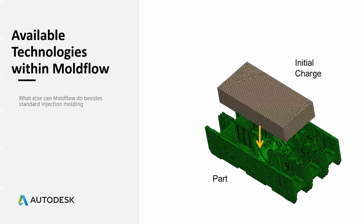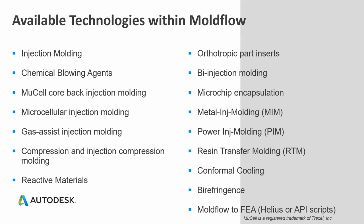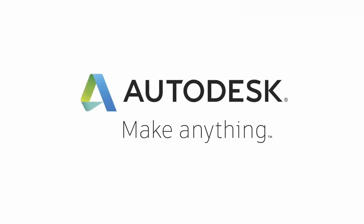Finally, while this class focused on injection molding, Moldflow supports many other technologies: chemical blowing agents, MuCell, MuCell core back, gas assist, compression, injection compression, reactive materials and thermosets, bi-injection, microchip encapsulation, metal and powder injection molding, resin transfer molding, and conformal cooling. You can also use Moldflow-to-Helius or API scripts to pass as-manufactured data to structural FEA for more accurate downstream analysis. Thank you for your time and attention.